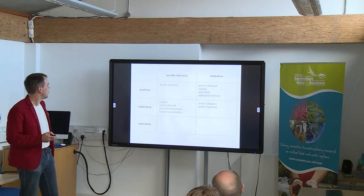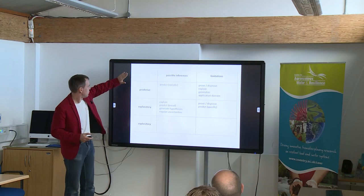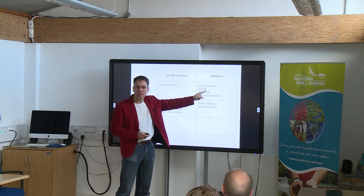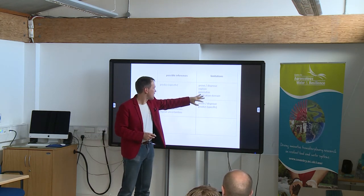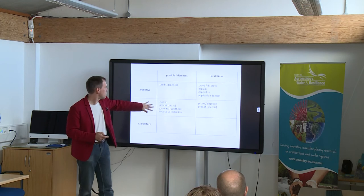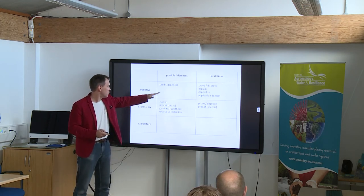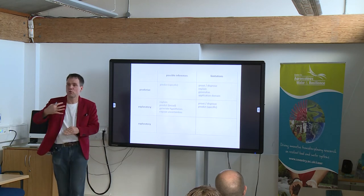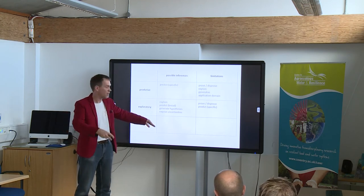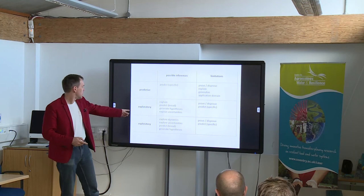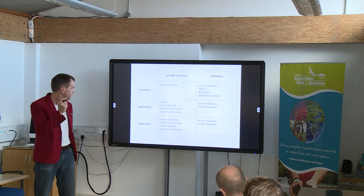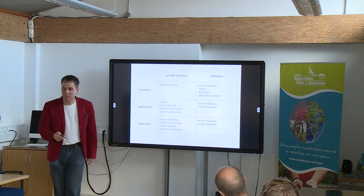So I think I will start wrapping up. What we can do with models — predictive, explanatory, exploratory. We can make predictions, but we can't necessarily prove or disprove anything specifically, and we can't really explain or generalize beyond their application domain. Explanatory models allow us to do a bit more — we can't make specific predictions but we can predict the broad width of the dynamics and generate hypotheses about how a system functions, which we can then go out and test in the field, or expose uncertainties.